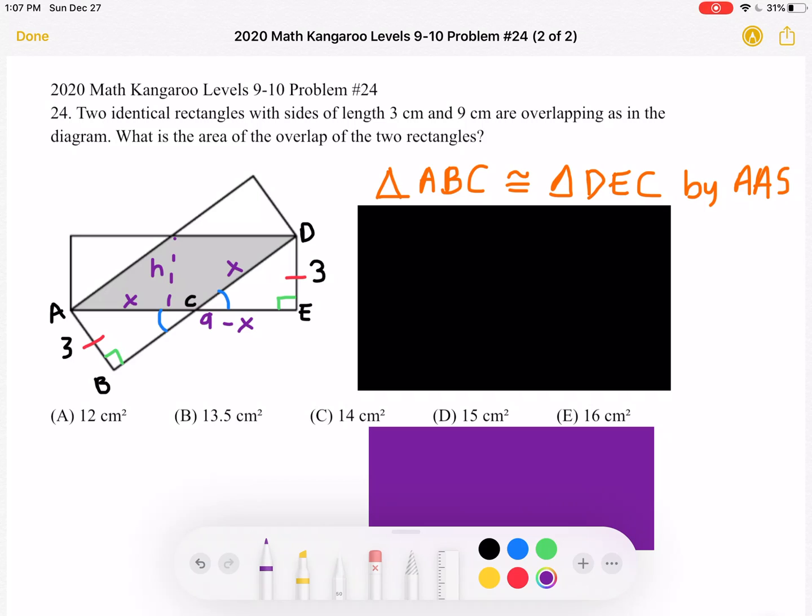So we know that angle ACB, which I have drawn over here in blue, must be equal to angle DCE, also drawn over here in blue, because the two are vertical angles, and vertical angles are always congruent.